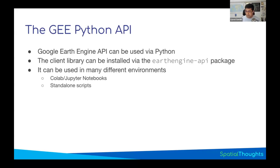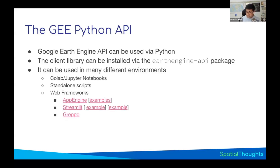If you're building scripts that run on a server, you can run Earth Engine code on the server without using a code editor. If you're building an app using a web framework like Flask or Django, you can integrate Earth Engine within that. There are many examples of Earth Engine API being used across different web frameworks. You can also use the Earth Engine API within QGIS to query and display data from Earth Engine. Anywhere you can run Python, you can run Earth Engine, and that gives you a lot of flexibility.